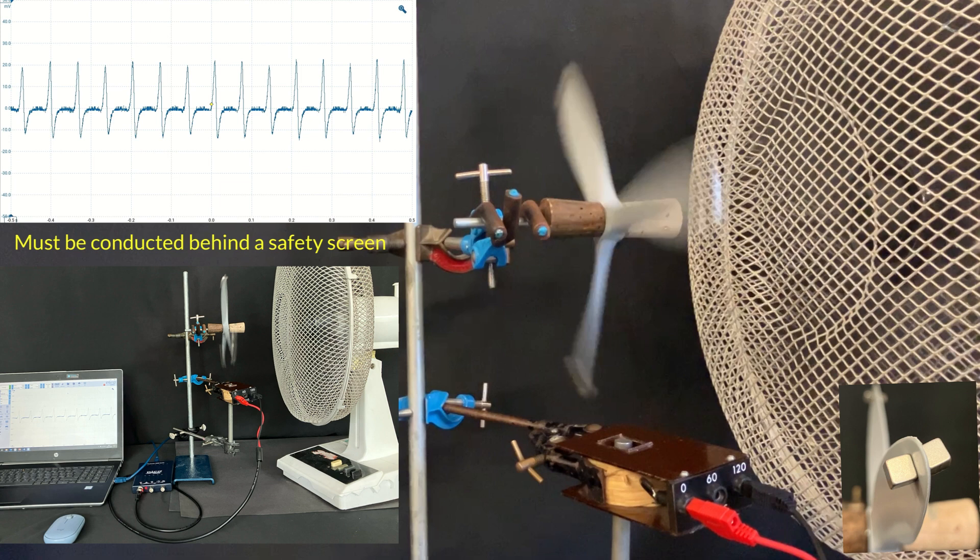But the frame rate of the video that I was using was 30 frames per second. That means there are two frames for each third of a rotation of the turbine blade...